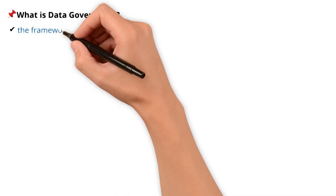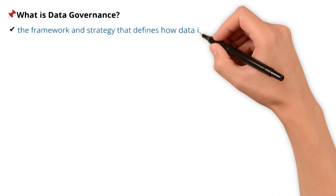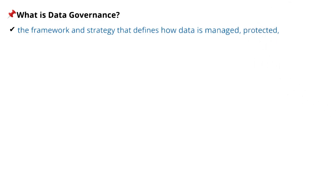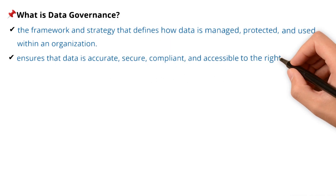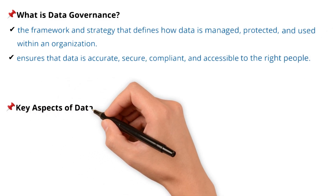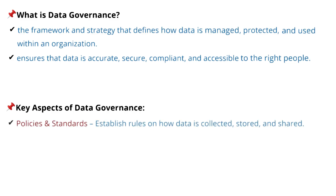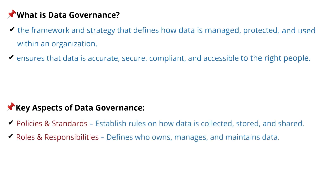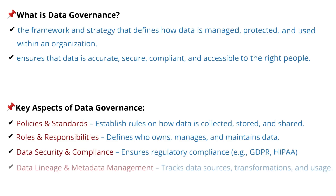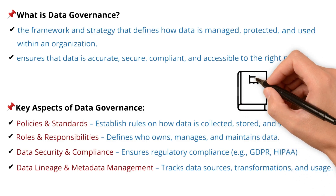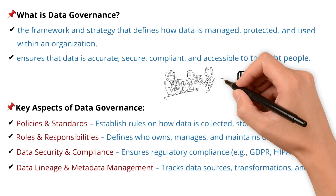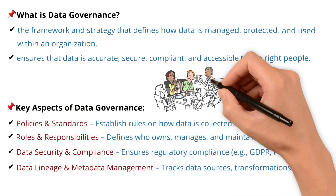Now when we apply governance principles to data, we get data governance. So what is data governance? It's the framework and strategy that defines how data is managed, protected, and used within an organization. It ensures that data is accurate, secure, compliant, and accessible to the right people. The key aspects of data governance include: policies and standards, roles and responsibilities, data security and compliance, and data lineage and metadata management.